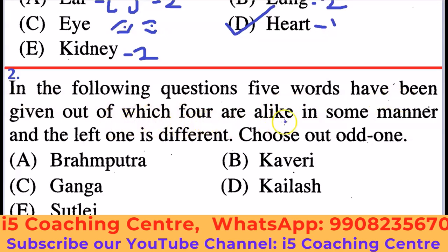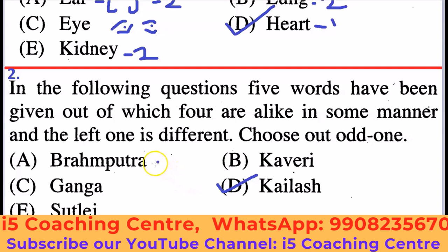Next example: five words have been given, four are alike in some manner and one is different — Brahmaputra, Kaveri, Ganga, Kailash, Sutlej. Which is different? In the above group, all are rivers except Kailash. Kailash is a mountain. Kaveri, Ganga, and Sutlej are names of rivers, while Kailash is the name of a mountain. Therefore, Kailash does not belong to the group. Kailash is the odd one out.